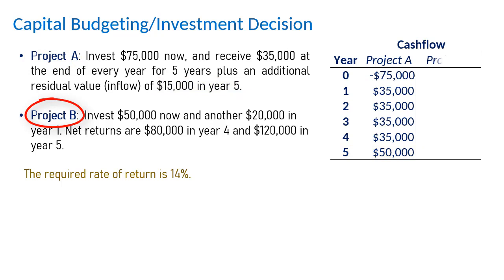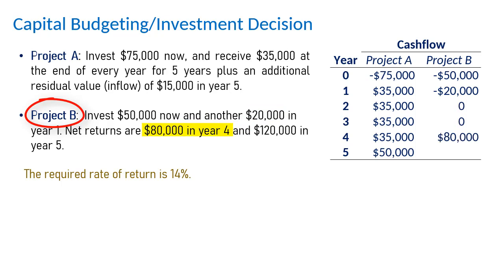For Project B, we have an outlay of $50,000 now and another outlay of $20,000 in Year 1, and subsequently receive $80,000 in Year 4 and $120,000 in Year 5.